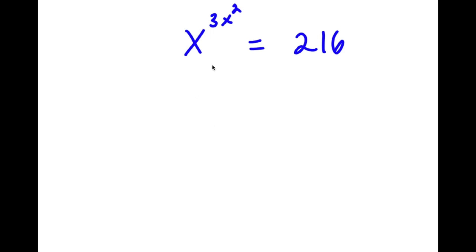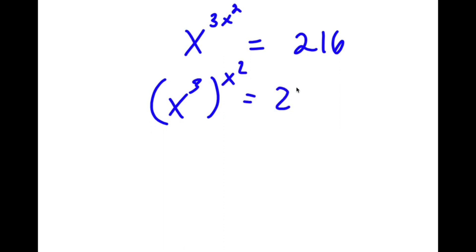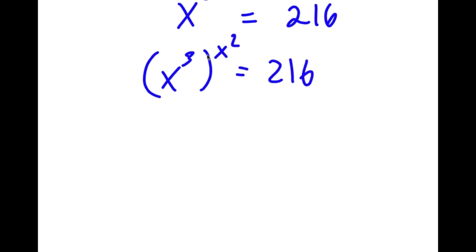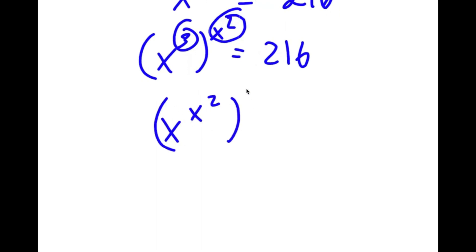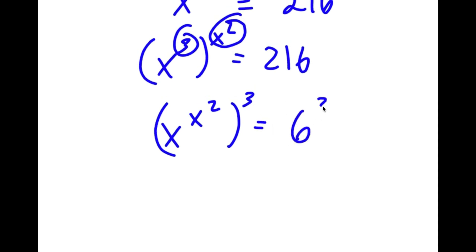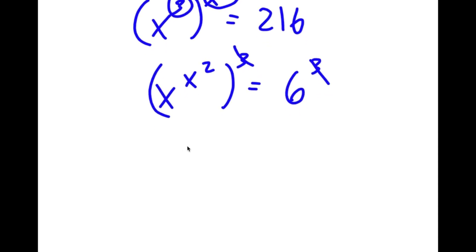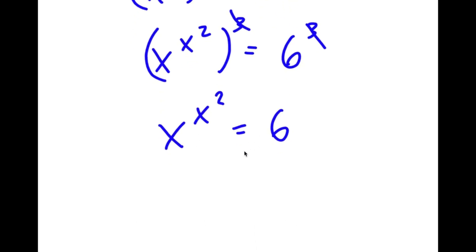So in this problem, I have x to the power of 3x squared is equal to 216. I'm going to rewrite this as x to the power of 3 to the power of x squared, then switch the order of 3 and x squared. So this is the same thing as x to the power of x squared to the power of 3 is equal to 216, which I rewrite as 6 to the power of 3. The two 3s cancel out, so now I have x to the power of x squared is equal to 6.